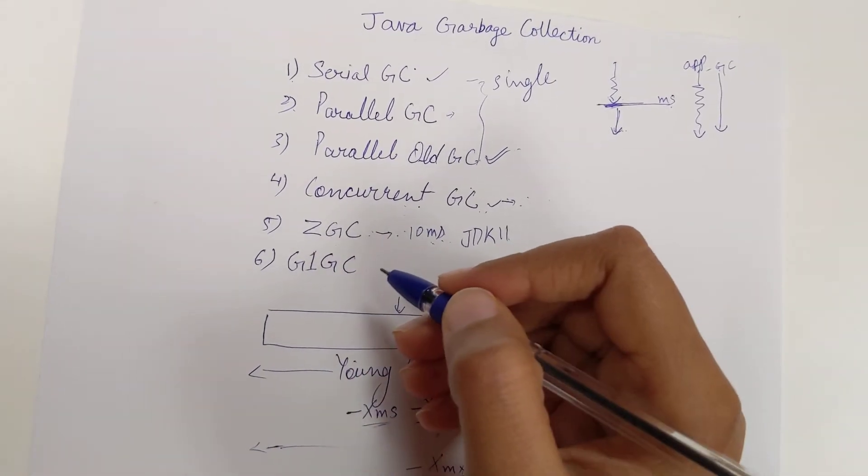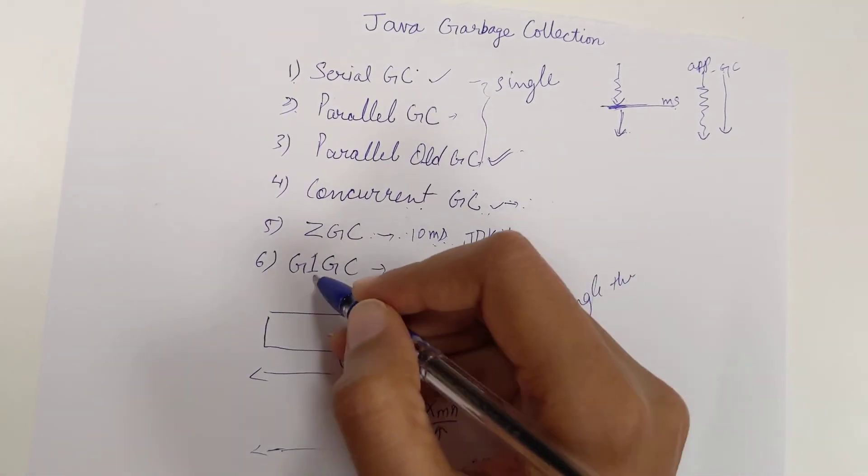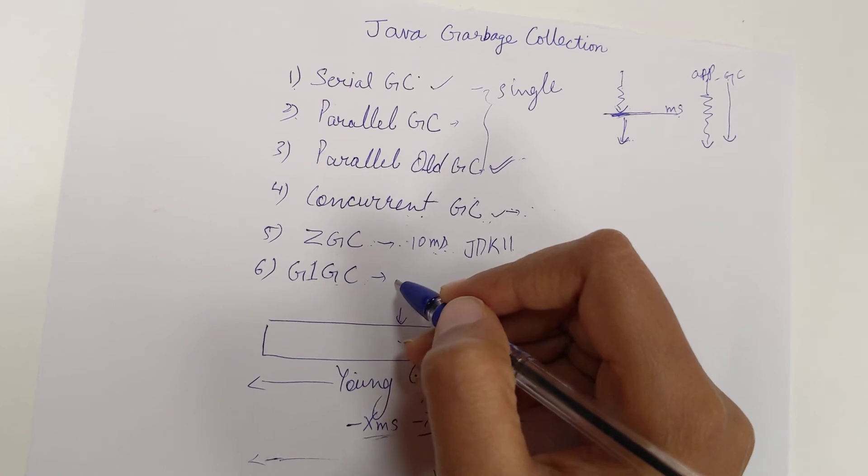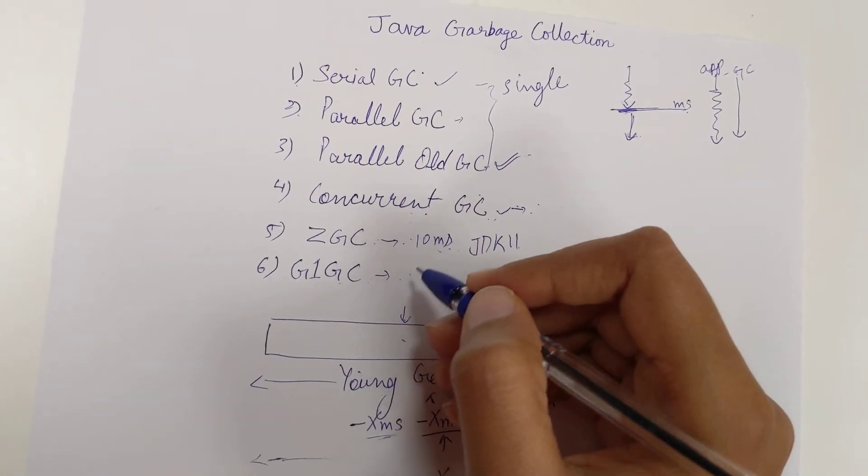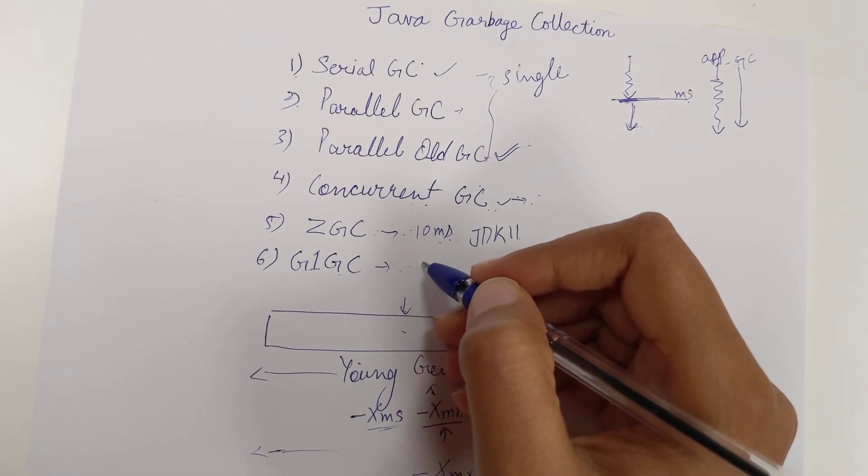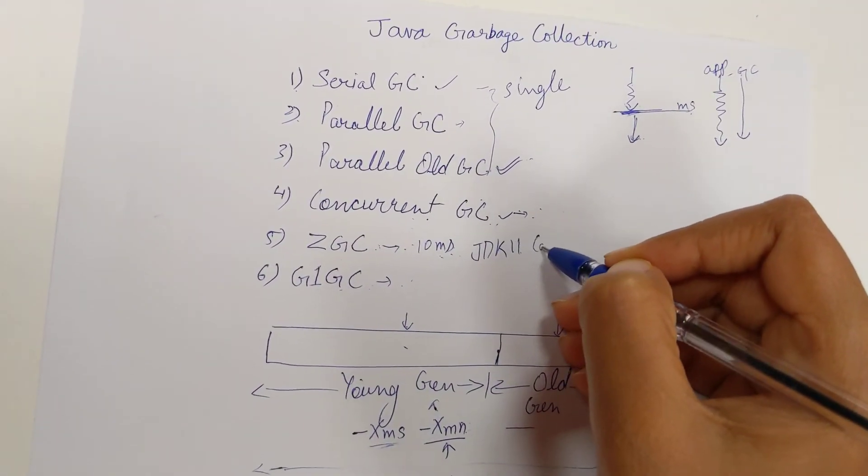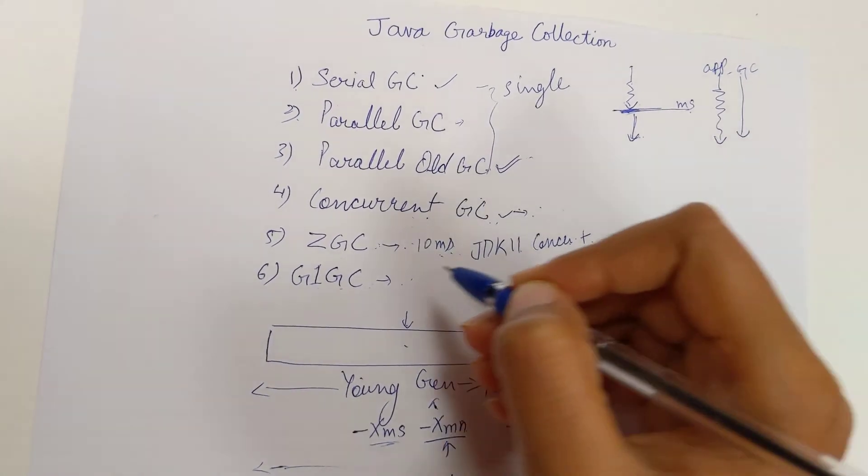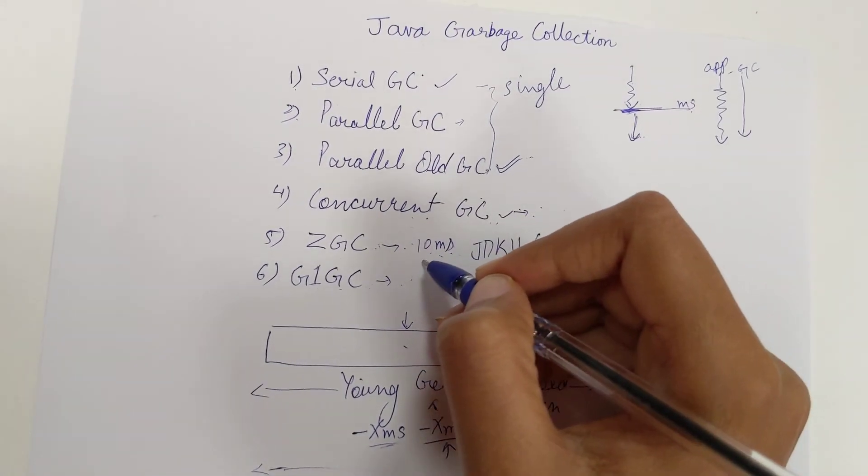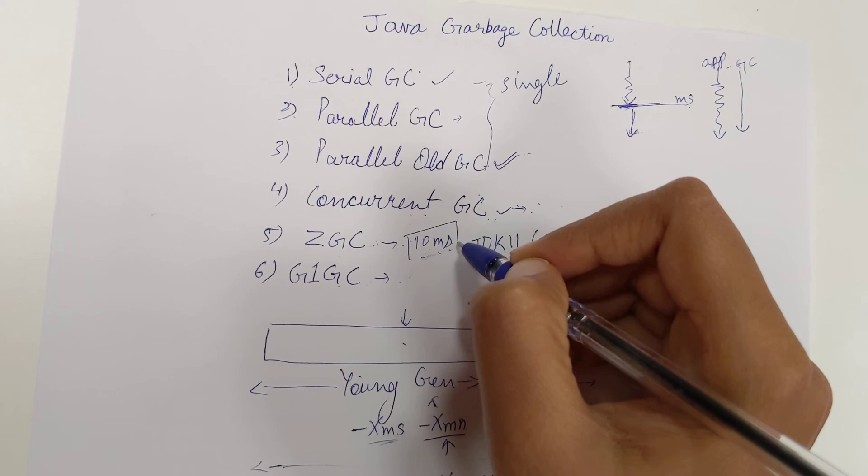G1GC is the default GC and is known as Garbage First Garbage Collector. ZGC is concurrent—some threads are running concurrently, plus some threads run for a few seconds with a pause time of very low, 10 milliseconds.